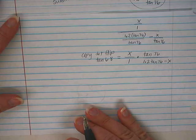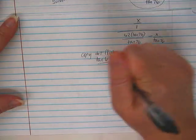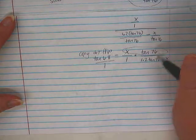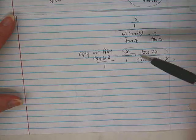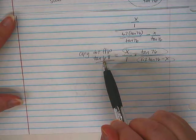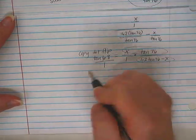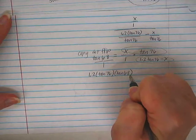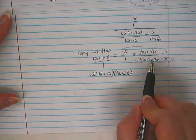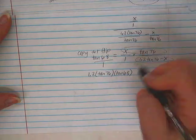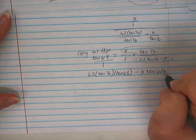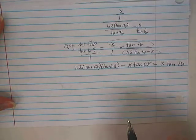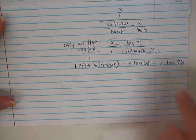So now we're trying to get X by itself, so I'm guessing at this point we just need to cross multiply. So I'm going to put that side over 1, and since this is just multiplying, that's basically the numerator, X times tangent 76, and here's the denominator, right? So then if I'm cross multiplying, it's this denominator times the tangent of 68. So I'll have 1.2 times the tangent of 76 times the tangent of 68, and that's that times that piece, but then we have to distribute, so then we would also have minus X times the tangent of 68. And then on this side we would end up with X tangent 76.